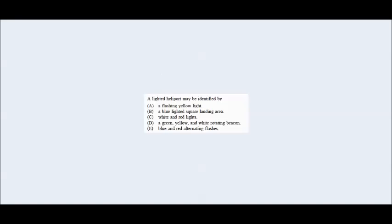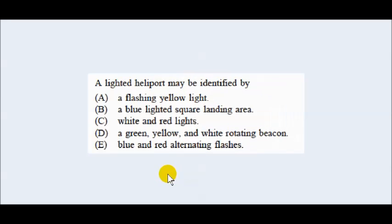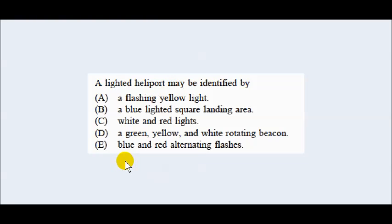This brings us back to our question: a lighted airport may be identified by — A, a flashing yellow light — we can eliminate that. B, a blue lighted square landing area — eliminate that. C, white and red lights — eliminate that. E, blue and red alternating flashes — eliminate that. So D is our answer: a lighted heliport may be identified by a green, yellow, and white rotating beacon.